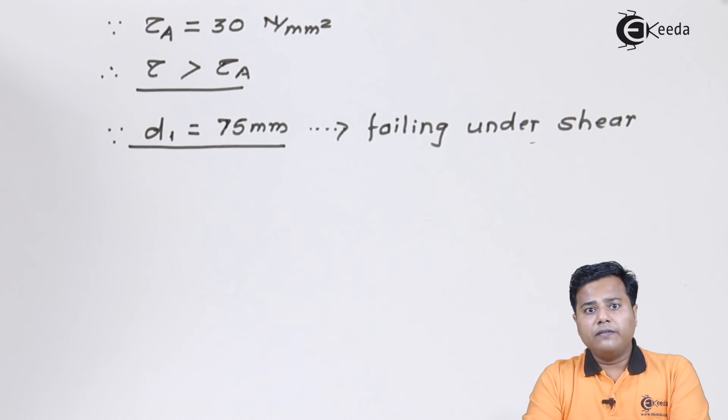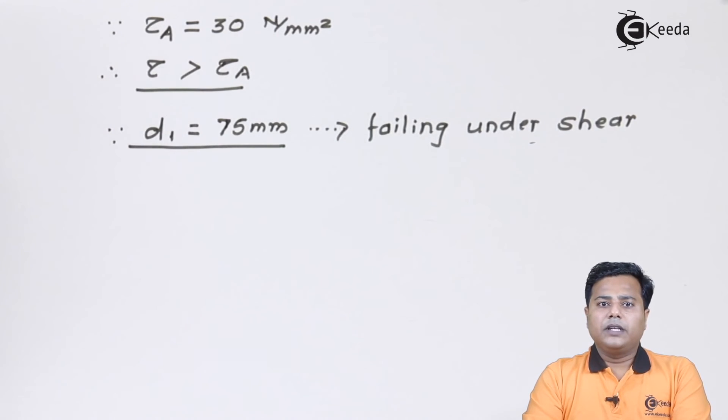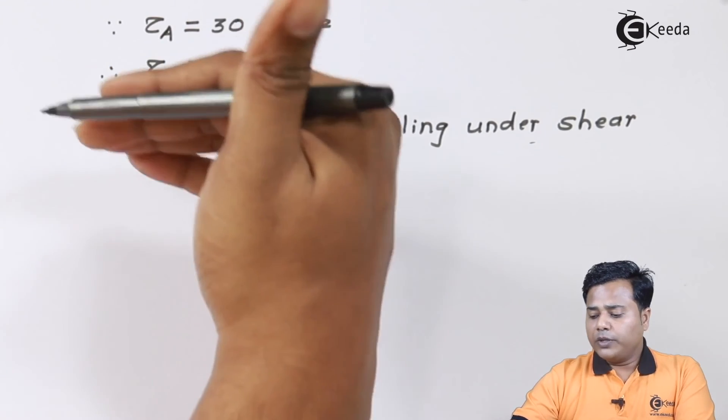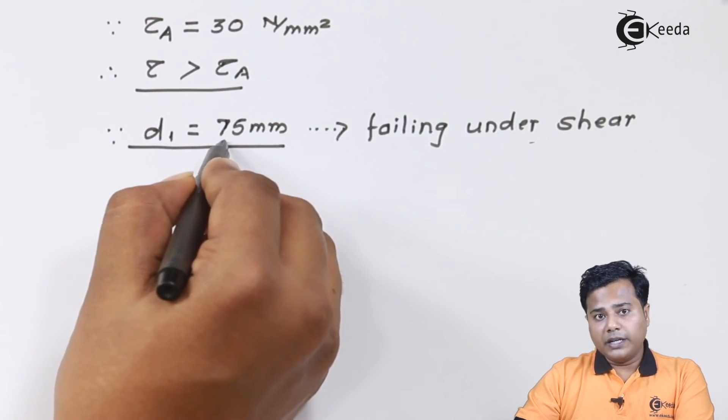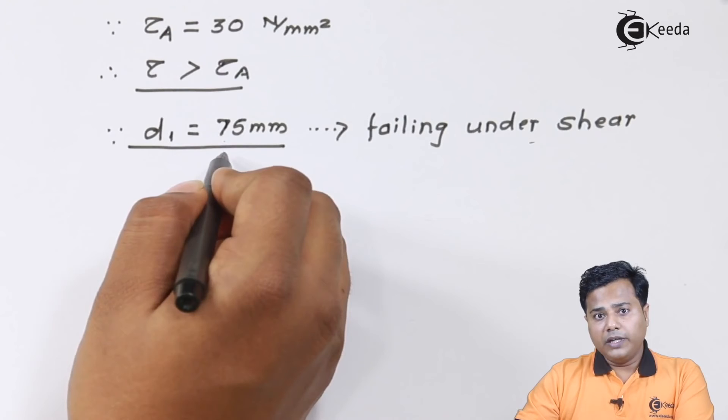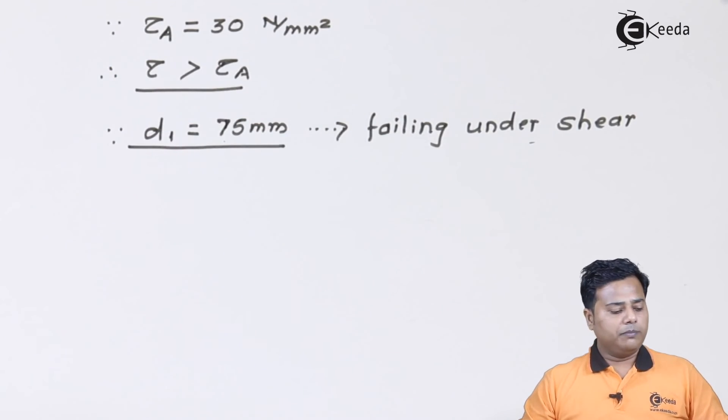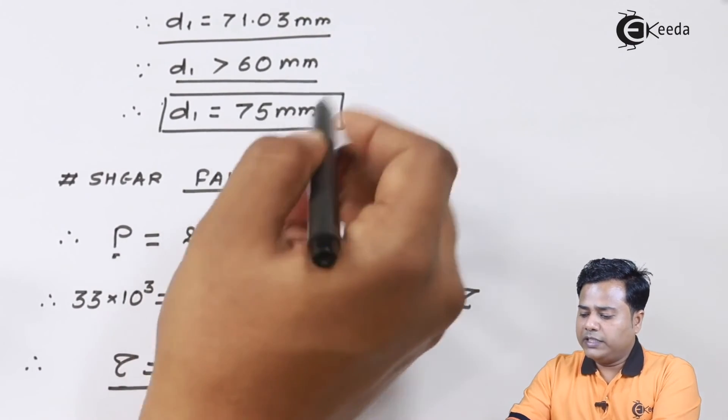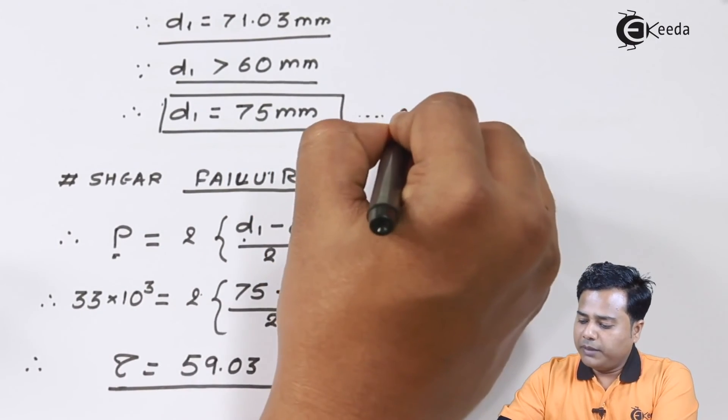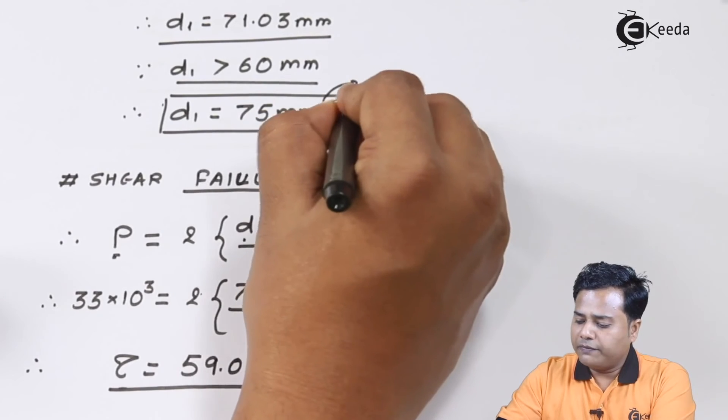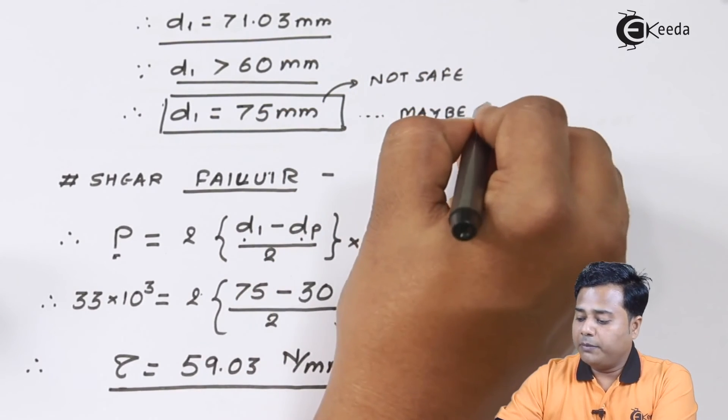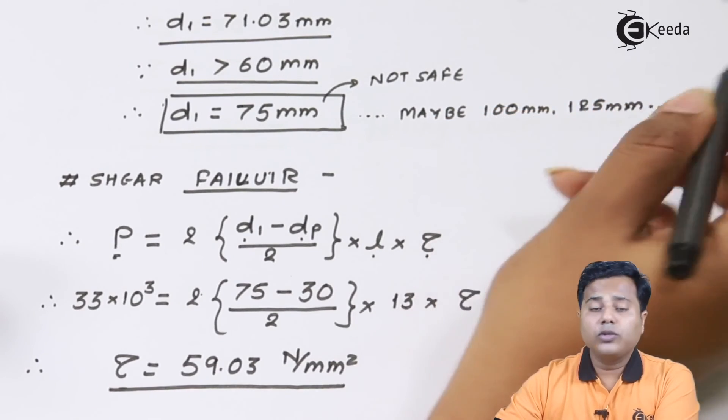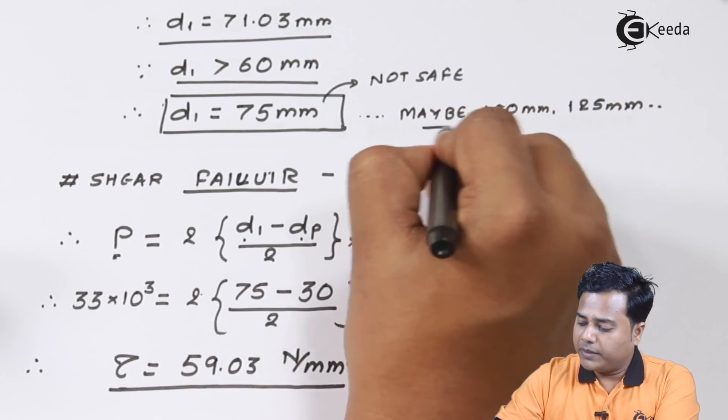Making a couple of trials in the margin of say 20 or 25 will get the exact answer. I'm avoiding that part right now to save our time. You can go for diameter equal to 100 mm, then 125 mm, and then proceed with the same calculation. It's a trial and error method.